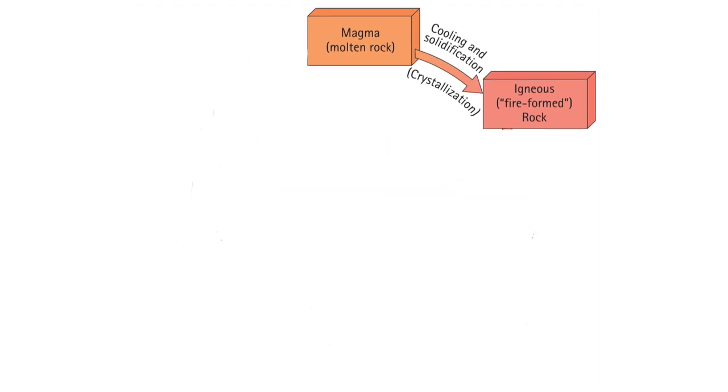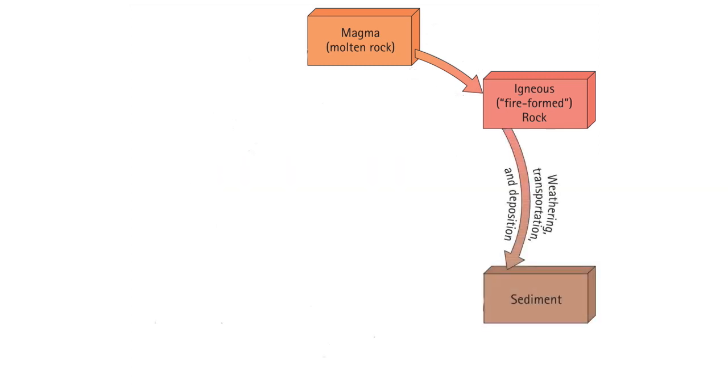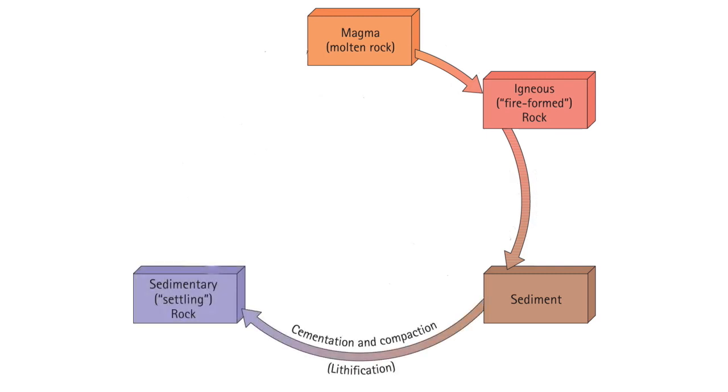Igneous rock makes up about 95 percent of Earth's crust, but the rock we see at the surface is mainly sedimentary rock. When igneous rock is subjected to weathering and erosion, sediment forms. As these sediments accumulate, they may compact from the weight of overlying sediment layers and/or become cemented from mineral-rich water that fills the spaces between the sediments. So by compaction and/or cementation, the sediment turns into sedimentary rock.